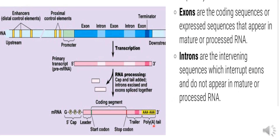Next is tailing or polyadenylation. Tailing occurs at the 3' end of pre-mRNA, where adenine nucleotides are added. Approximately 100 to 200 adenonucleotides are added in this polyadenylation process.